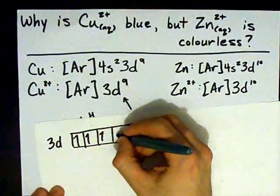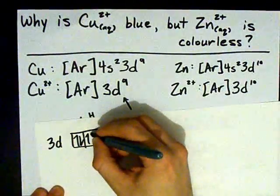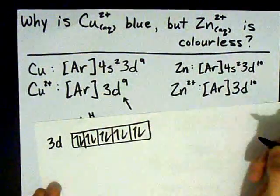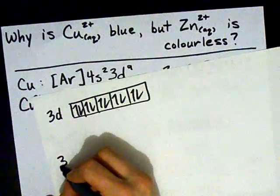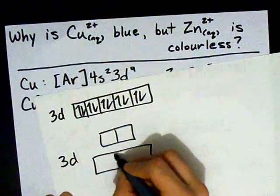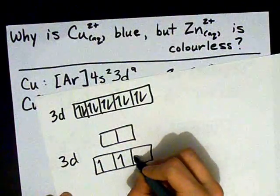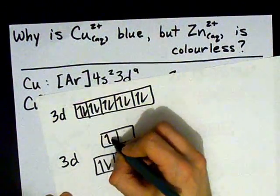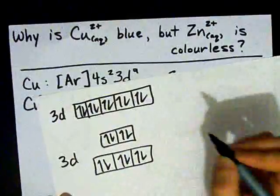10 electrons. And the split D levels for zinc would be 10 electrons filling all orbitals.